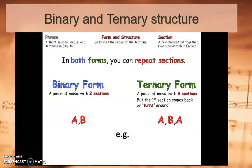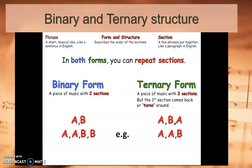In both forms, you can repeat sections. For example, A, A, B, B is still binary, and A, A, B, A, A is still ternary.